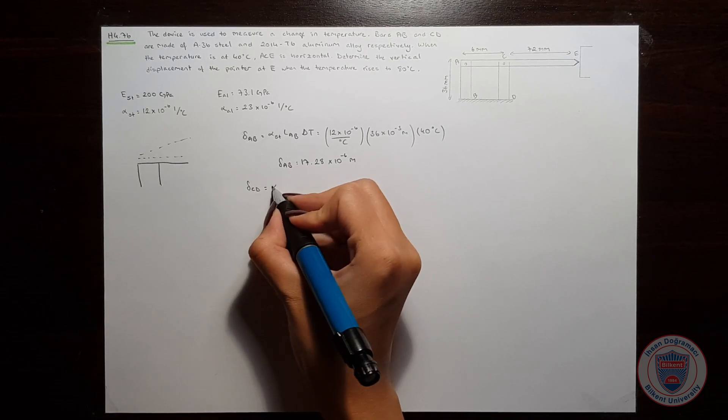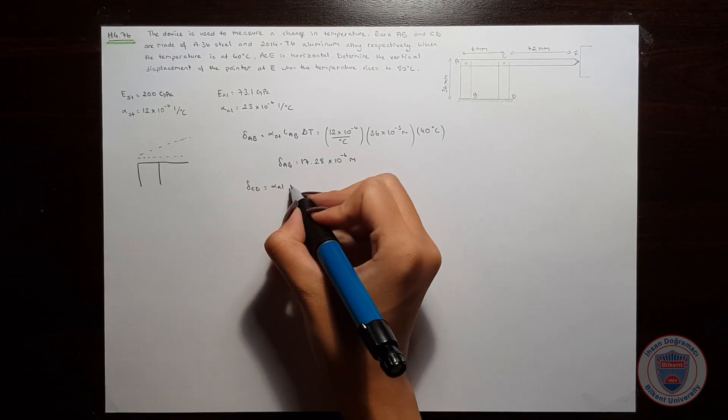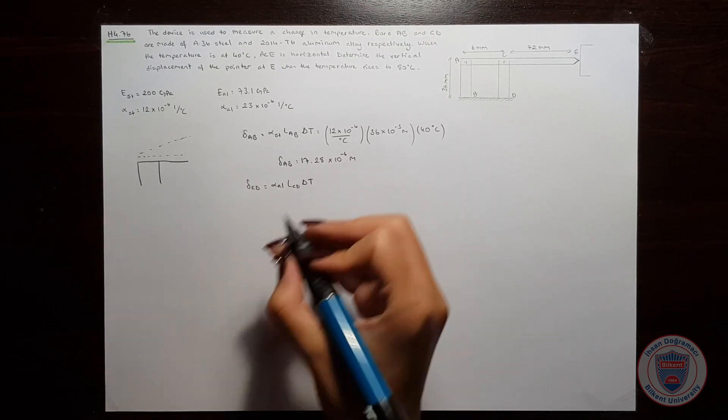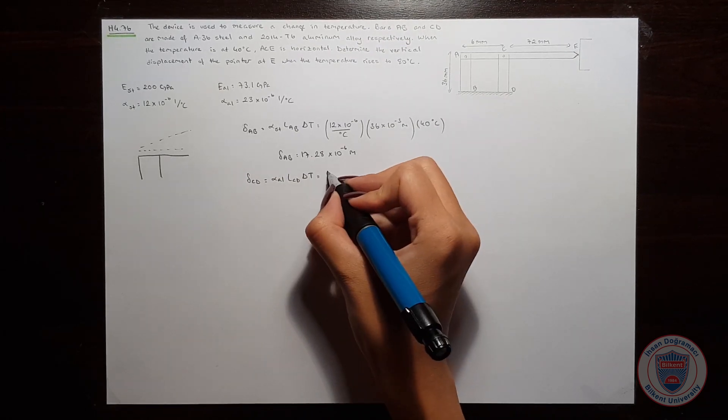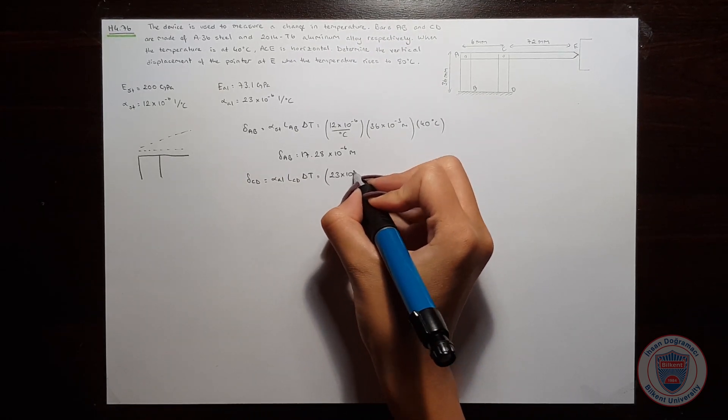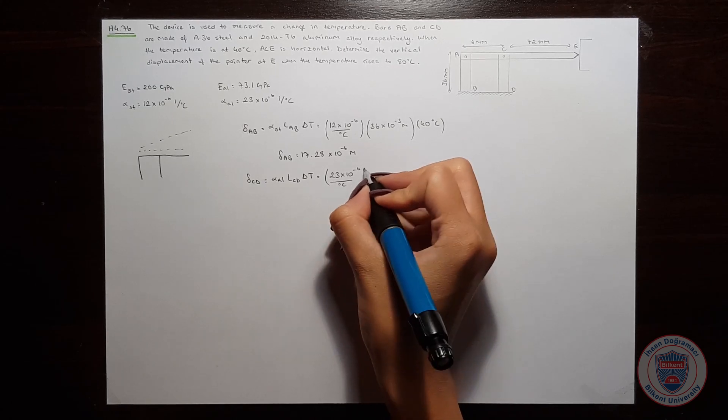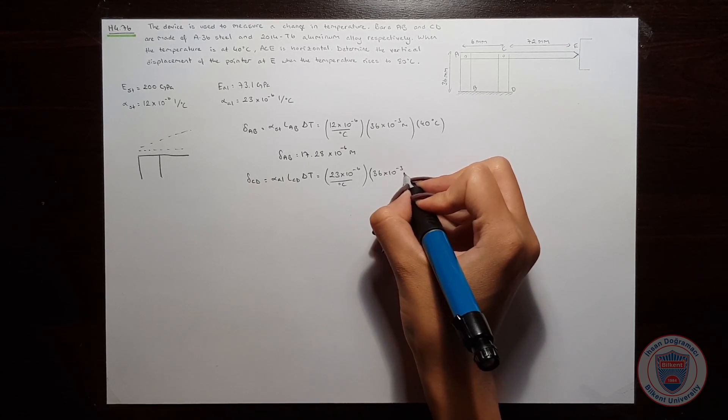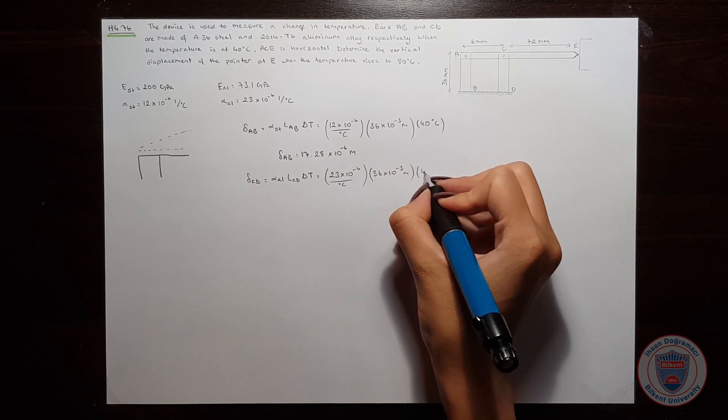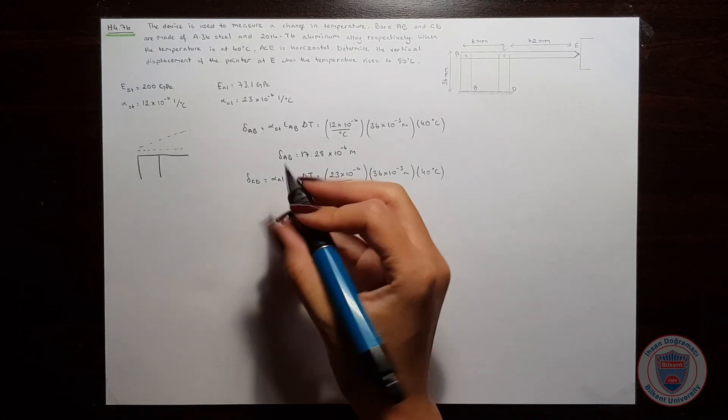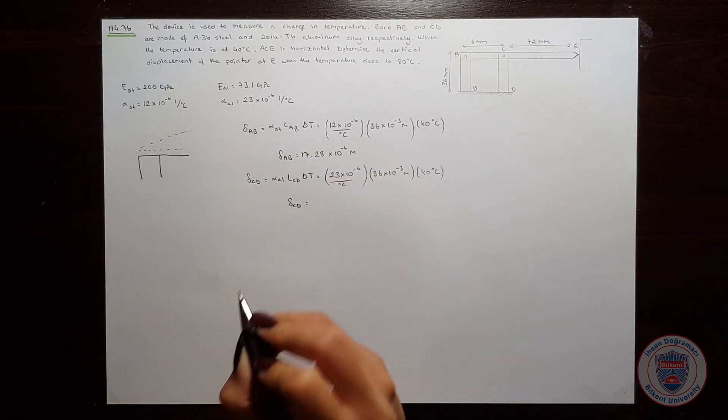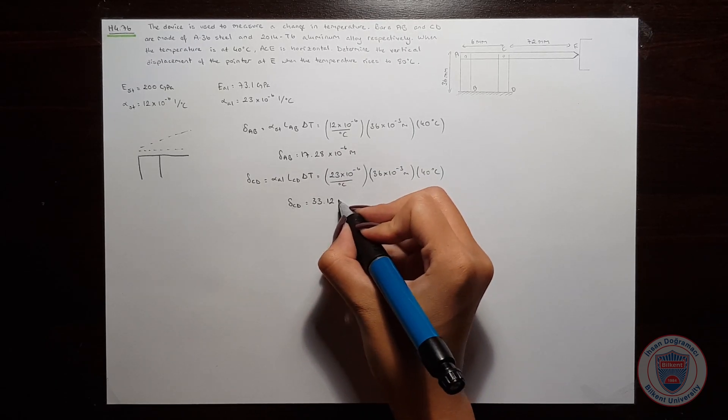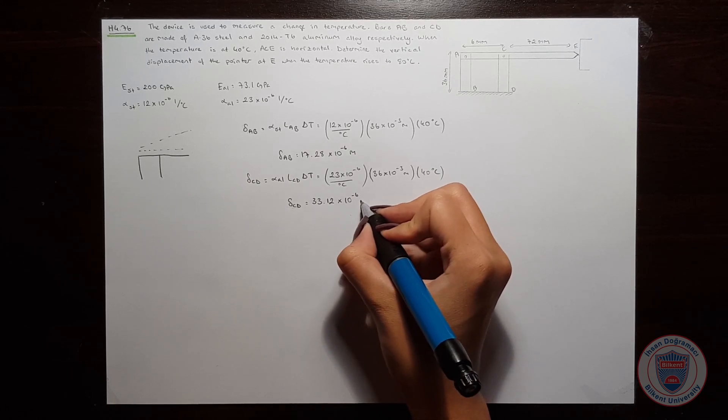Let's calculate the displacement of the bar CD. It will be equal to alpha aluminum, L_CD, and delta T. And it will be equal to 33.12 times 10 to the power of minus 6 meters.